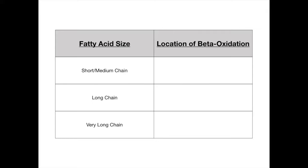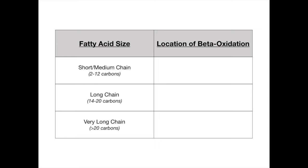Short and medium chain fatty acids have 2 to 12 carbons. Long chain fatty acids have between 14 and 20 carbons. And very long chain fatty acids have greater than 20 carbons — so 21 or more.